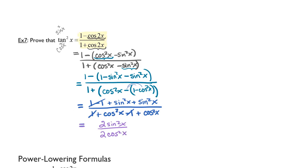And as you can see I can divide out those 2's — they'll reduce. And I'm left with my final answer, which is the proof as desired: tangent squared of x equals tangent squared of x.